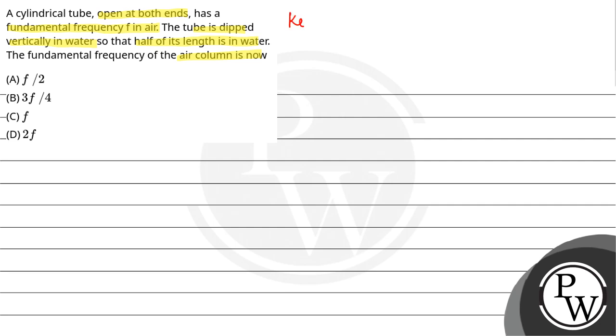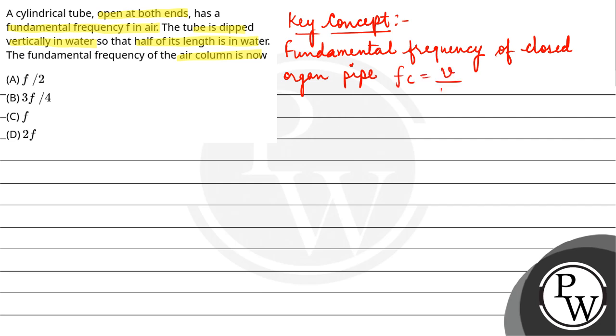The key concept is fundamental frequency of closed organ pipe: Fc = V/(4L), and fundamental frequency of open organ pipe: Fo = V/(2L). Now the question is, open pipe frequency is given.